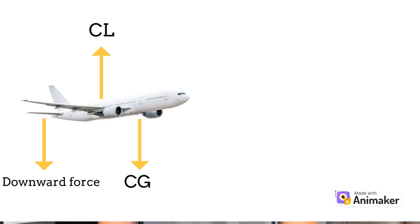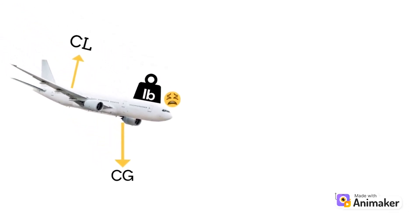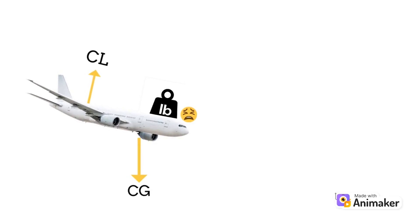An airplane that is properly loaded will have its CG slightly forward of the center of lift. The center of lift's job is to counteract the center of gravity. However, because the CG is placed a little bit forward of the center of lift, the nose tends to pitch down — you have more weight forward, creating a heavier nose with nose-down tendencies. This is actually very beneficial. If you're flying at a higher angle of attack, lower airspeed, and stalling, the nose-heavy tendency aids in lowering the angle of attack to help you recover.